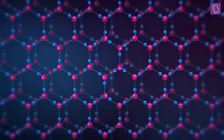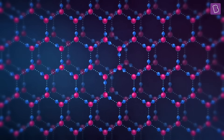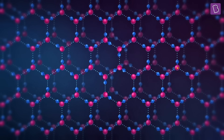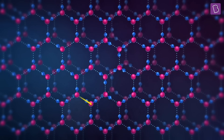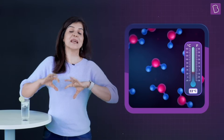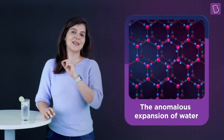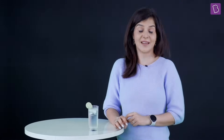At zero degrees and below, these molecules successfully form the cage-like structures and water changes into ice. If you look closely, you can see large gaps between the cages, which makes ice even less dense than cold water. That is why ice floats over water. While most liquids contract and become denser, water expands and becomes less dense when cooled below four degrees — this is what we call the anomalous expansion of water.